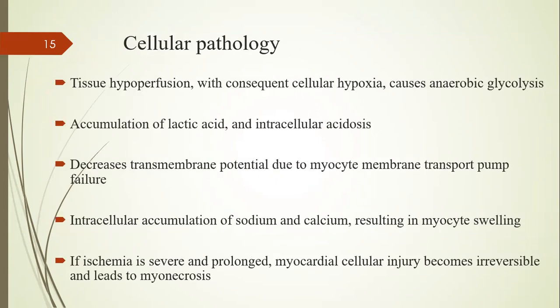At the cellular level, tissue hypoperfusion causes cellular hypoxia, which causes anaerobic metabolism or anaerobic glycolysis. This leads to accumulation of lactic acid causing intracellular acidosis, which reduces myocardial function. It also causes decreased transmembrane potential due to myocyte membrane failure, leading to intracellular accumulation of sodium and calcium, resulting in myocyte swelling and further reduction in myocardial function. If ischemia is severe and prolonged, myocardial cell injury becomes irreversible and leads to myonecrosis.